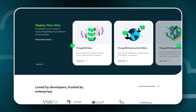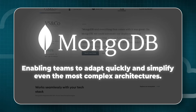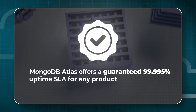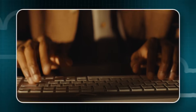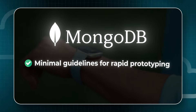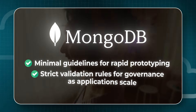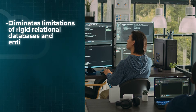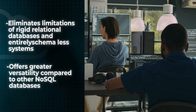That's where this video's sponsor, MongoDB, comes in. MongoDB Atlas is a unified data platform built on the document model, giving teams the flexibility to adapt quickly and the power to simplify complex architectures. MongoDB Atlas offers a guaranteed 99.995% uptime SLA for any production deployment. Even though in traditional NoSQL databases you cannot join different tables, with MongoDB you can join different tables — or collections, which are similar to tables in the MongoDB world. MongoDB provides schema flexibility, but developers can also choose their level of schema structure and validation, from minimal guidelines for rapid prototyping to strict validation rules for comprehensive governance as applications scale.